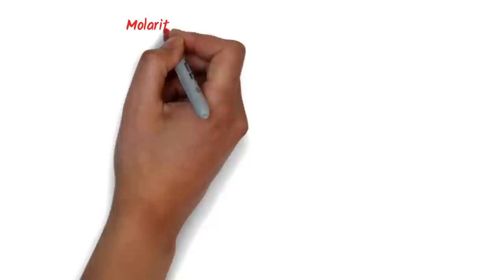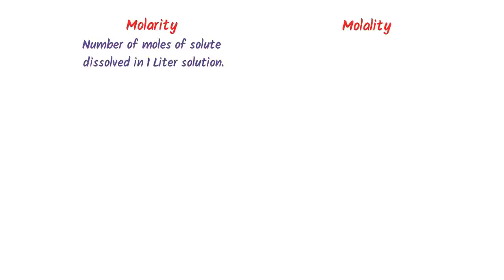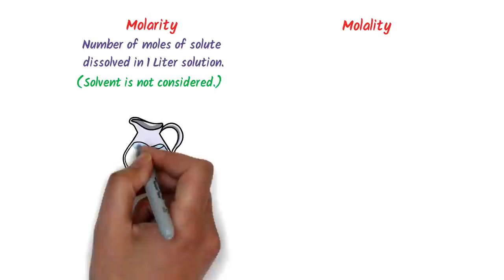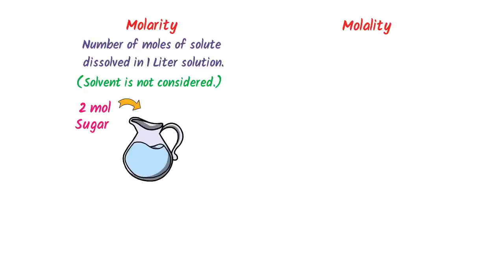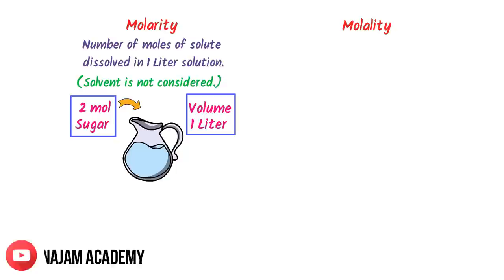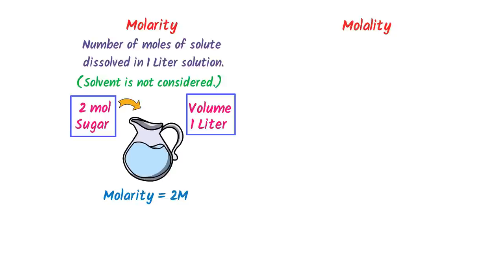The last topic is molarity and molality. Molarity is the number of moles of solute dissolved in 1 liter of solution. Note that we do not consider the solvent in molarity. For example, adding 2 moles of sugar to water until the solution volume becomes 1 liter gives a molarity of 2 M. The formula for molarity is: number of moles of solute divided by volume of solution.